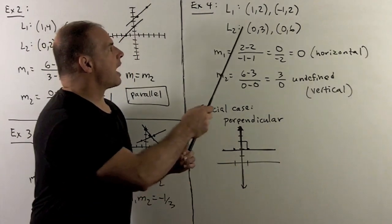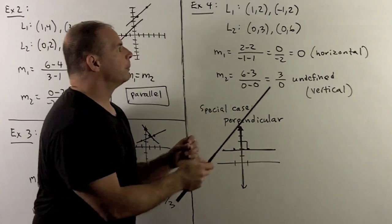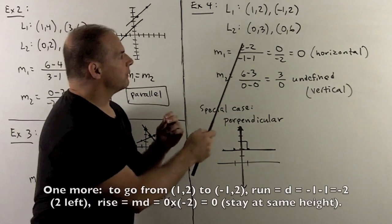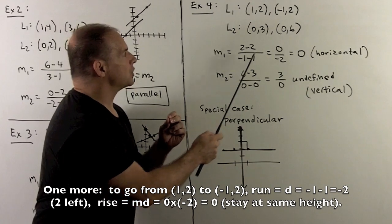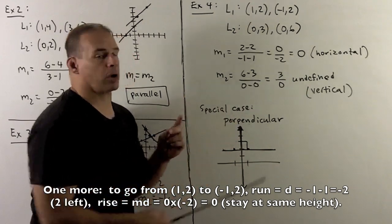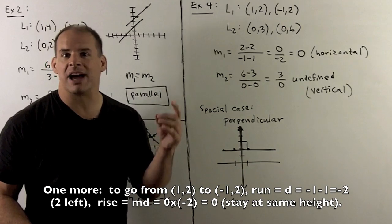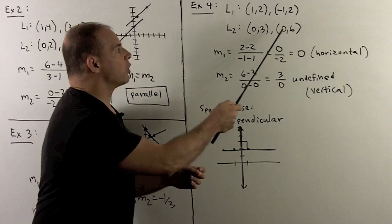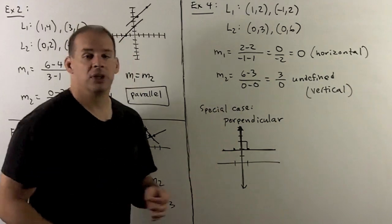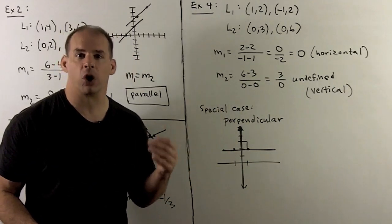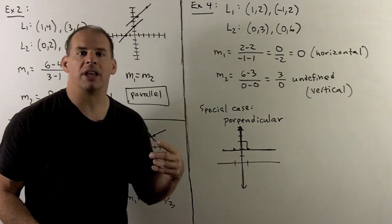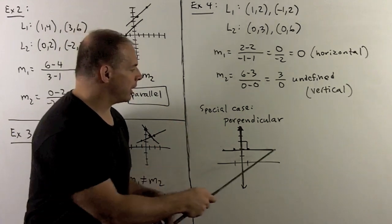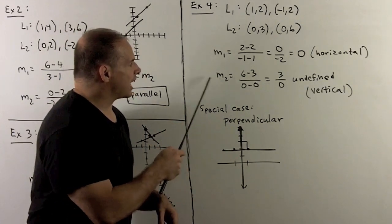Final example: the line through (1, 2) and (minus 1, 2), and the line through (0, 3) and (0, 6). First slope: (2 minus 2) over (minus 1 minus 1) = 0 over minus 2 = 0 — slope is 0, so this is a horizontal line. Second slope: (6 minus 3) over (0 minus 0) = 3 over 0 — slope is undefined, so this is a vertical line. A horizontal line and a vertical line intersect in exactly one point at a 90-degree angle, so they are perpendicular. The second line here is just the y-axis.